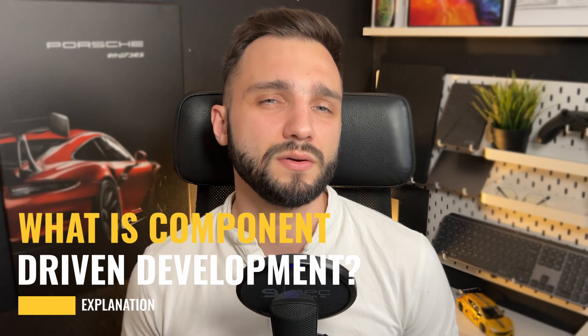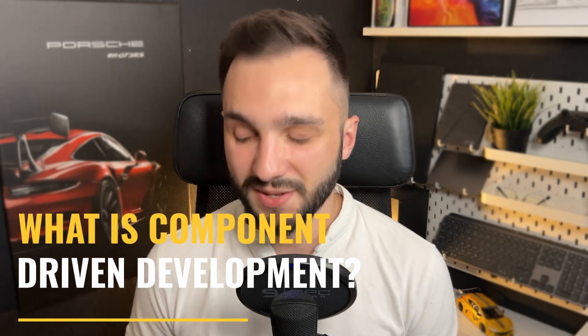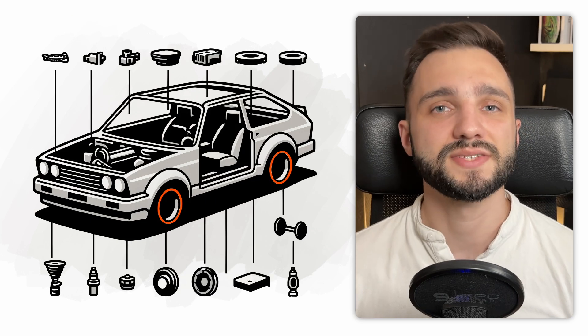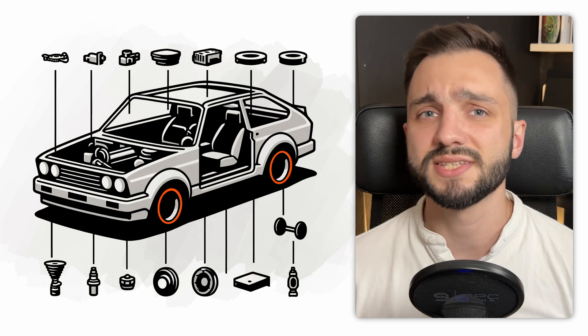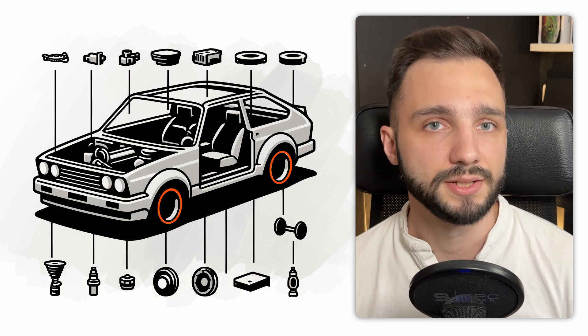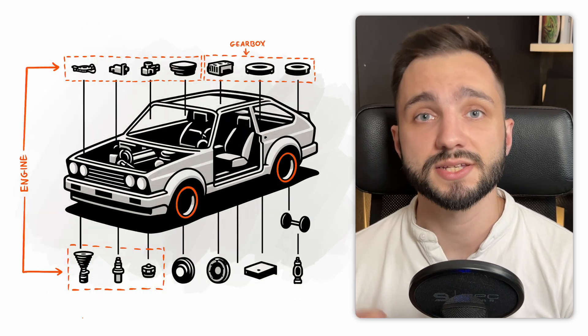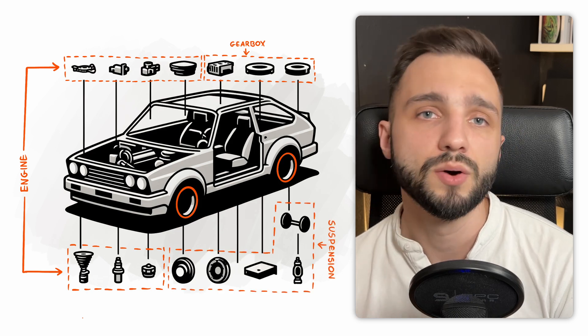What is component-driven development? Let's consider the simplest analogy. What is a car? It's a tool that simplifies your life, but focusing on architectural terms, a car is a collection of self-sufficient modules, each designed to perform specific tasks. These modules – like the engine, suspension or gearbox – work together to meet your needs. Each module has a distinct function, but together they ensure that the car works effectively and efficiently.